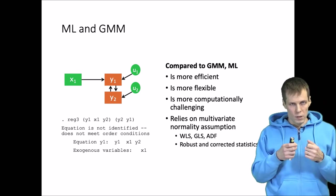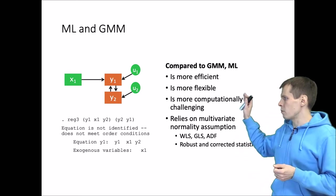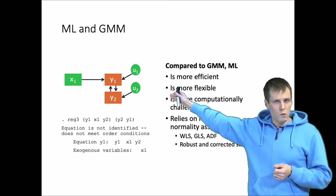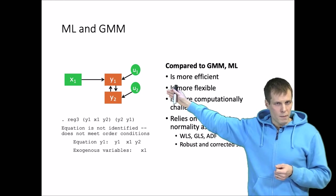So every time when you introduce assumptions you generally gain efficiency. It is also more flexible, and for example maximum likelihood estimation can be used to estimate this model here, and this cannot be estimated with GMM.